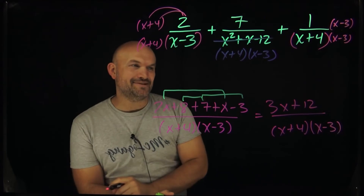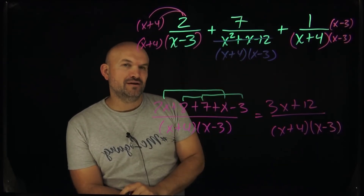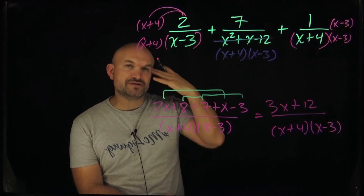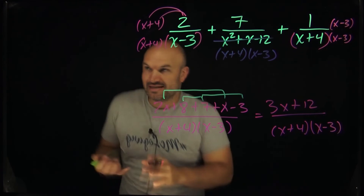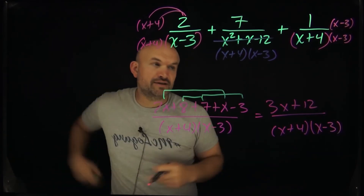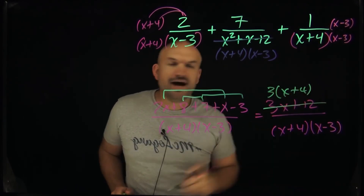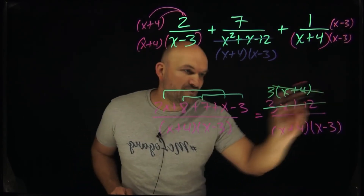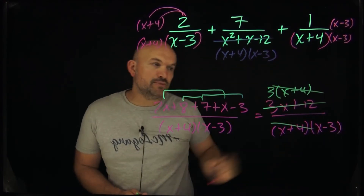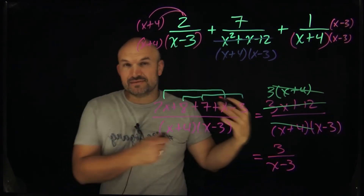Now I want to identify what terms I can combine: the 2x and the x, the 8 and the 7, and then minus 3. That gives me 3x + 12 divided by (x + 4)(x − 3). But we're not done yet — just like I factored the denominator earlier, I should factor the numerator now. When I factor out a 3 I'm left with 3(x + 4). The x + 4 factors now divide out, leaving me with just 3 over (x − 3). That is our simplified expression.